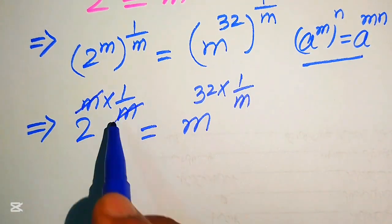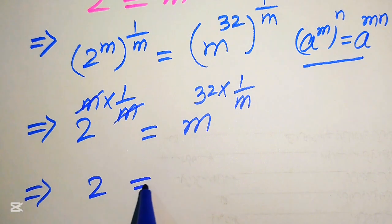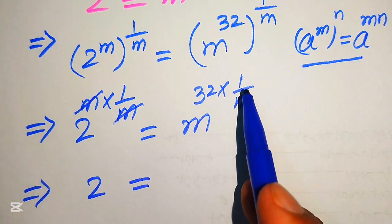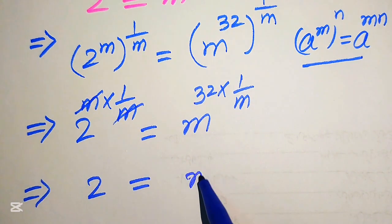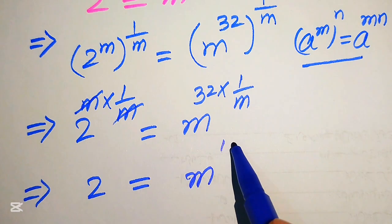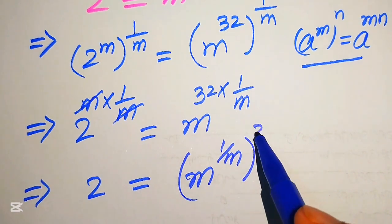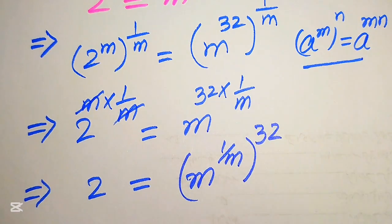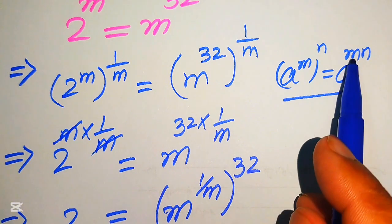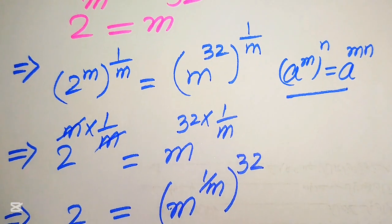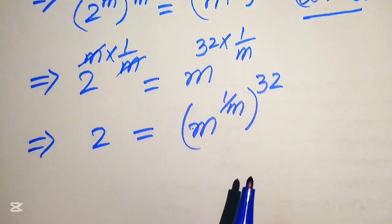This m is cancelled out by this m, and it will be written as 2 equals to — here we move this 1 over m inside the term — m to the power of 1 over m, and its whole power is 32. Here we back-apply this exponent law, moving this m inside the term.